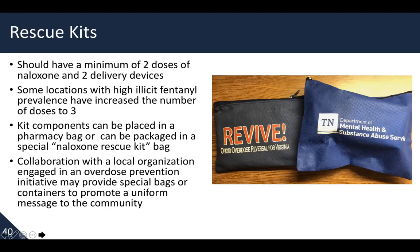In Virginia and Tennessee you may have seen the naloxone rescue kits available — in Virginia the Revive kit, through the Department of Behavioral Health, and Tennessee's kit through the Department of Mental Health and Substance Abuse Services. Each kit should have a minimum of two doses of naloxone and two delivery devices. Some locations with high illicit fentanyl prevalence have increased the number of doses to three because multiple doses of naloxone may be needed. Kit components can be placed in a pharmacy bag or packaged in a special naloxone rescue kit bag, and collaboration with local overdose prevention organizations may provide special bags to promote a uniform community message.